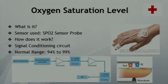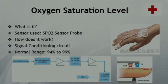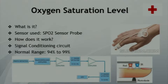Oxygen saturation level is the concentration of oxygen in the blood. The sensor we used was a SpO2 sensor probe, worn around the finger. It emits light of two different wavelengths — red light and IR light. The transmitted light is absorbed by a photodiode and converted to current. The oxygen saturation level is calculated as the concentration of oxygenated hemoglobin divided by the total concentration of hemoglobin in the blood.